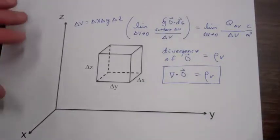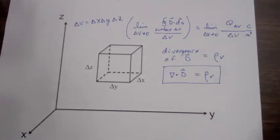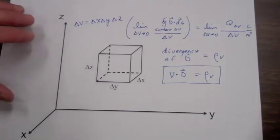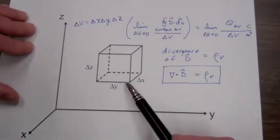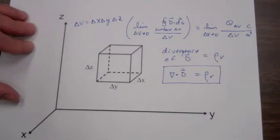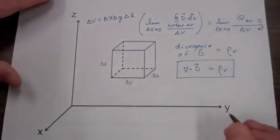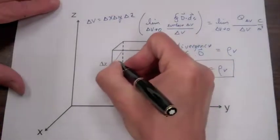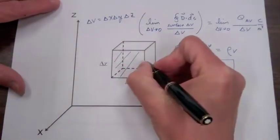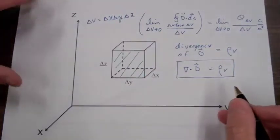If you wanted an equation for performing the divergence in spherical or cylindrical coordinates, you'd go through the same process but start with the differential volume element in those coordinate systems. Looking at this cube, let's call this the front face and the opposite side the back face.